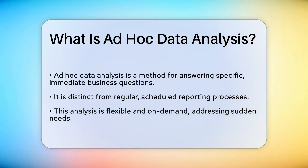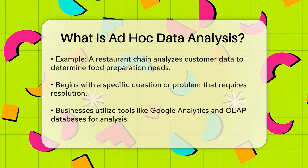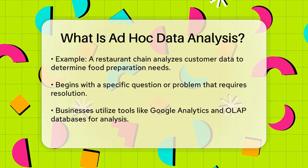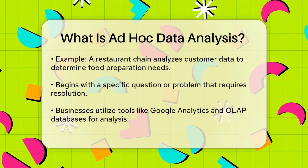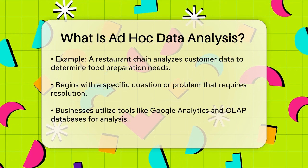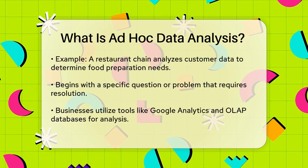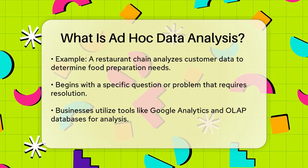Imagine a restaurant chain like J.H. & Sons, which needs to know how much food to prepare based on the number of customers and their preferences. Using ad hoc analysis, they can quickly analyze customer data to make informed decisions about food availability and menu items.